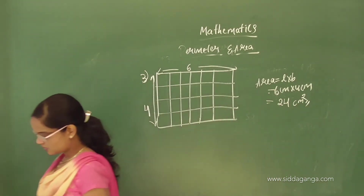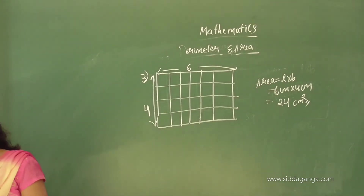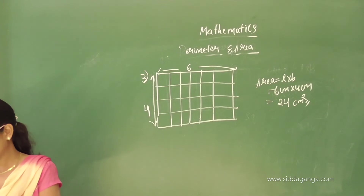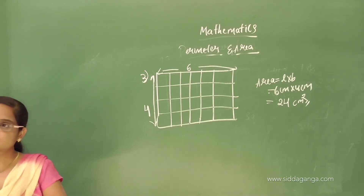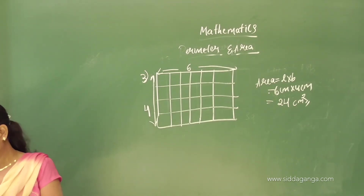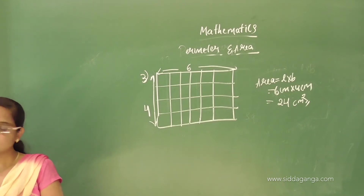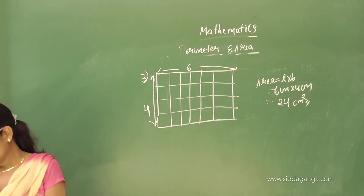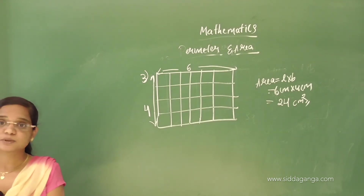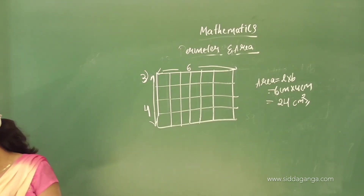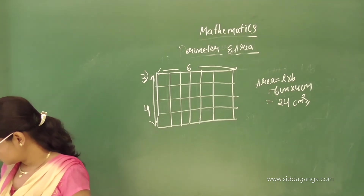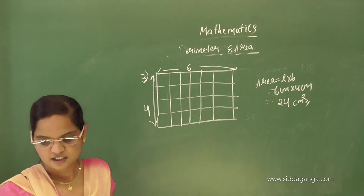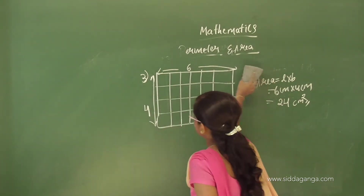So 24 centimetre square is the answer. You can try questions 4 and 5 as your homework. You can count the length and breadth and find the answer — breadth 3 gives answer 21. You can do these problems easily.